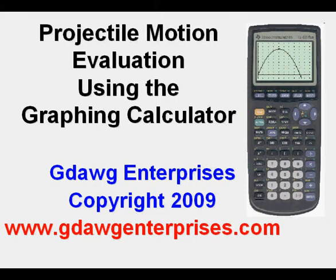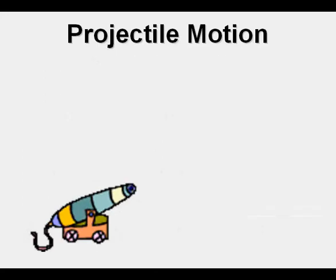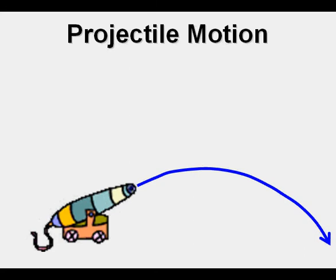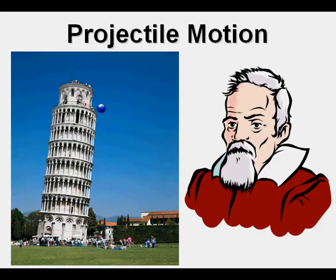Projectile motion evaluation using the graphing calculator. Here we have a cannon firing and the cannonball will eventually trace an arc and will hit the ground over time. Galileo is said to have dropped balls from the Leaning Tower of Pisa and recorded by time position of the ball and was able to determine that objects accelerated with time due to the force of gravity.